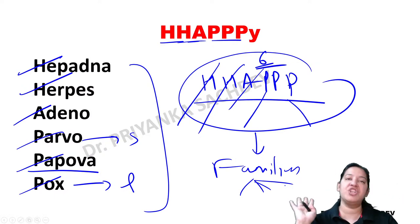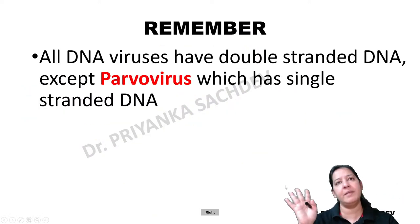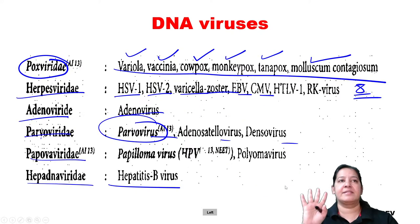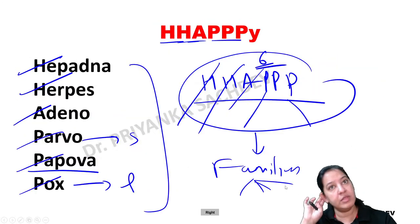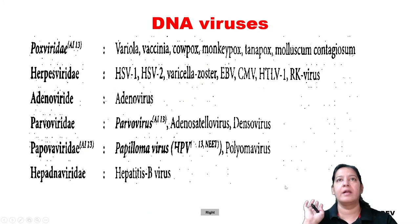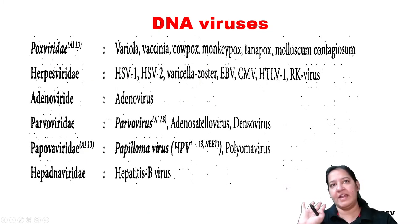For the sake of classification you have to learn the name of the families and the members inside each family. That is about the DNA viruses. These are the six DNA virus families.